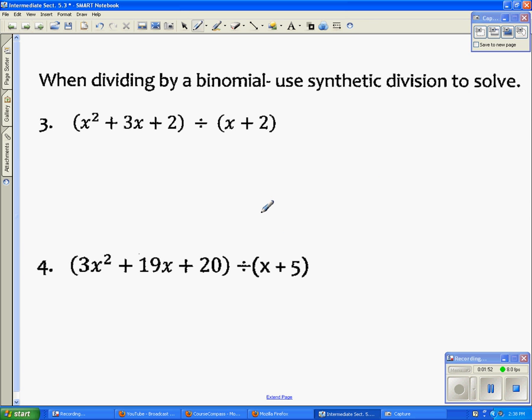Next, we're going to use synthetic division to solve. It's just a method. So the first thing I'm going to do is we make a little box here, and we always do opposite of this, so we get negative 2. We always start opposite of that. Then we bring down the coefficients in front of these. These have to be in order.